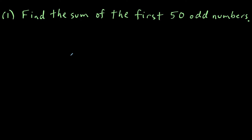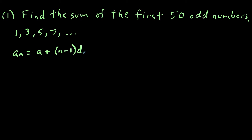For this first question, let's add up the first 50 odd numbers. We're starting at one, the next odd number would be three, then five and seven, and this list will continue. But rather than make a list of 50 numbers, we can use the formula a sub n equals a plus n minus one times d — the formula for the nth term of any arithmetic sequence. This sequence qualifies as arithmetic because it goes up by two each time.